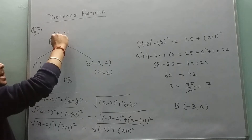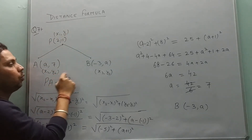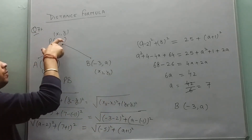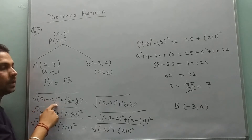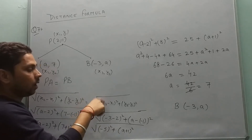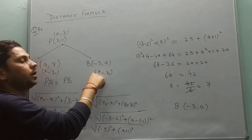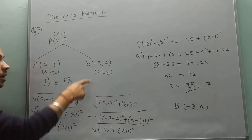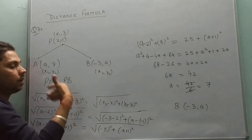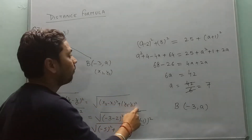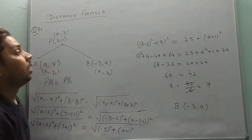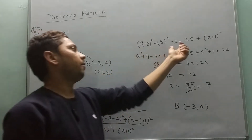I mark point P as (x1, y1), A as (x2, y2), and B as (x3, y3). Then apply the distance formula first on PA: PA equals under root of (x2 minus x1) squared plus (y2 minus y1) squared. On the other side, apply the distance formula using coordinates x3, x1, y3, y1 and substitute all values.